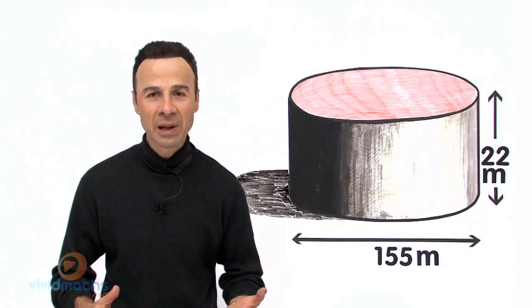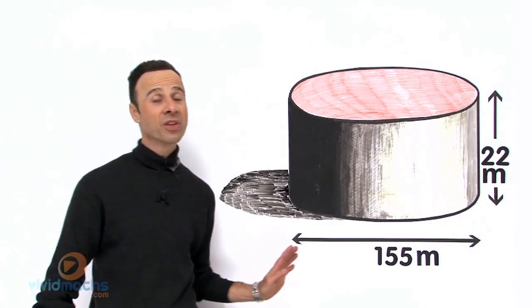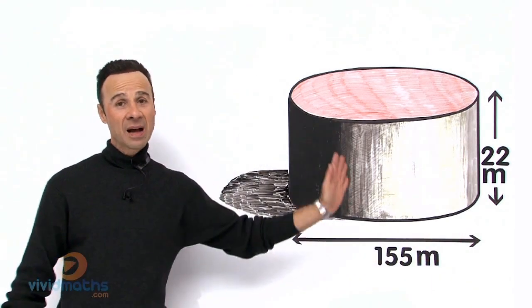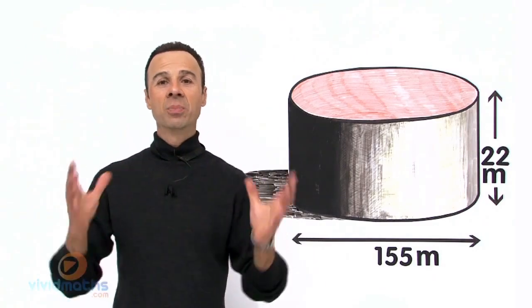We're going to take it in three steps. Step number one is to write down the formula—always write down the formula. Then we're going to work out the radius because we're given the diameter here, not the radius, so we're going to halve that. Then we're going to put it into the formula V equals pi r squared h and get the complete volume.